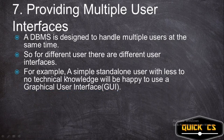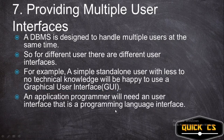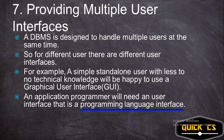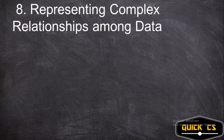An application programmer, on the other hand, will need a programming language interface so they can edit code and see bugs in the interface. A normal user will need a graphical user interface which is much easier for them to use. This is the advantage DBMS has — it provides different interfaces for different types of users.